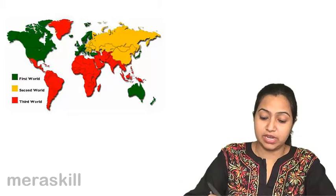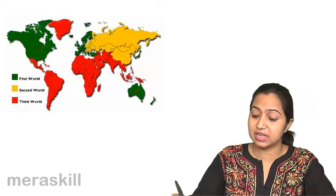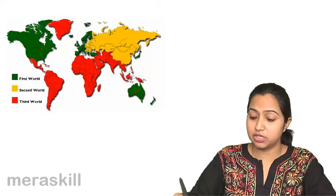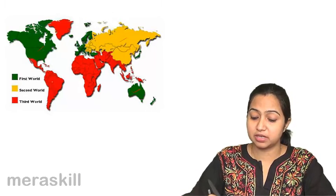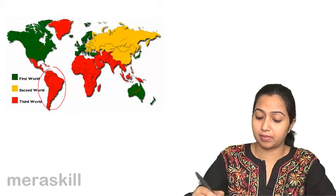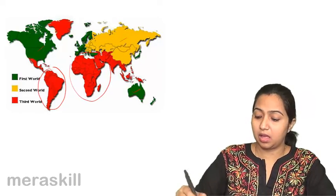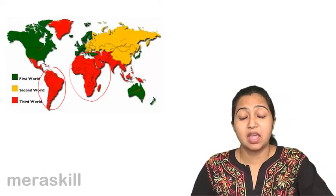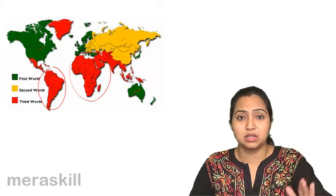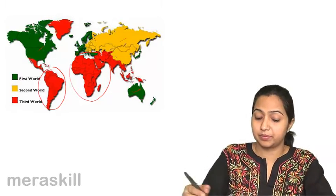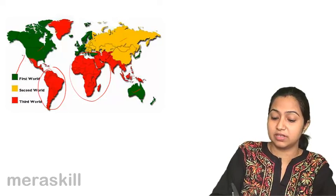Some portions are green, some portion is orange and some portion is red. Why three parts? The green ones are the first world countries.